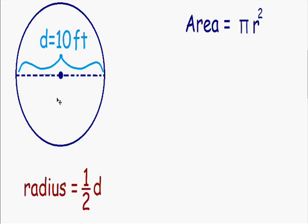So if the diameter is equal to ten feet, then the radius is equal to one half of ten, which is just five. And once we have our radius, we can plug it into our formula.